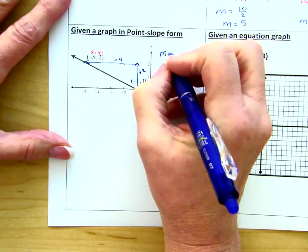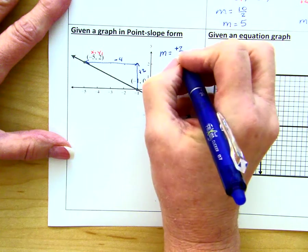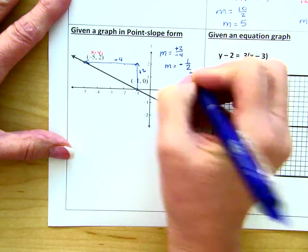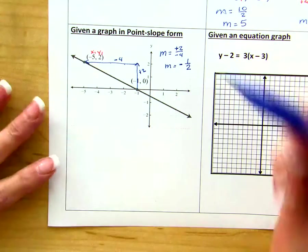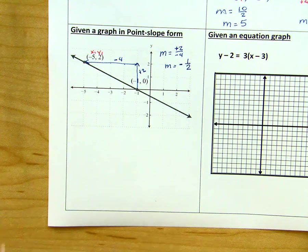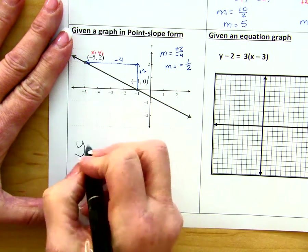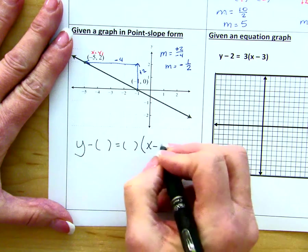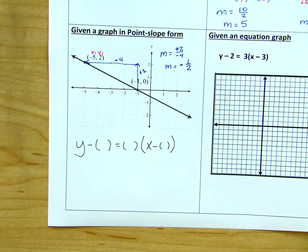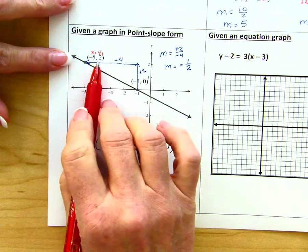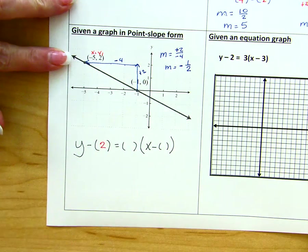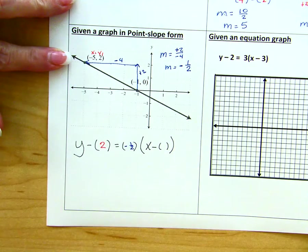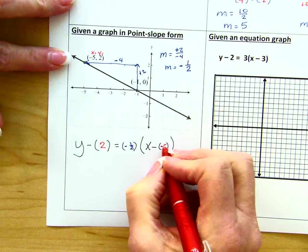So my slope is going to be positive 2 over negative 4. And whenever I simplify that, I get a negative 1 half. So I use the graph to get my slope. I'm going to write the skeleton for my point slope form and substitute in values. My y sub 1 is a positive 2. My slope is a negative 1 half. And my x sub 1 is a negative 5.